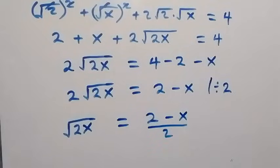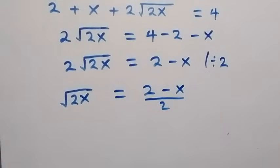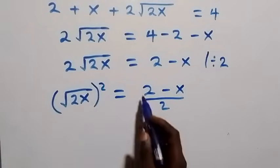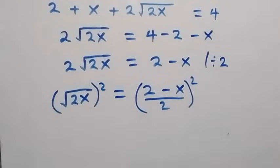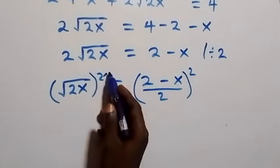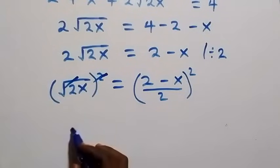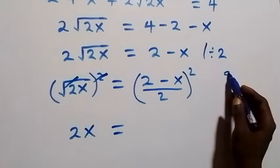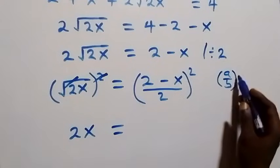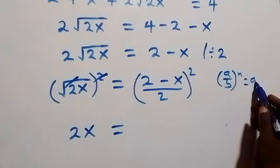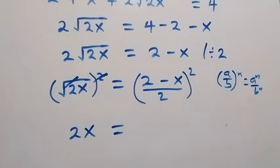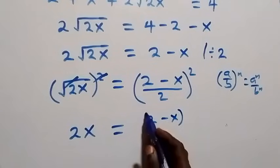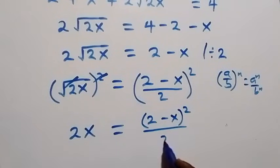We can also square both sides here. When we square this side we have everything squared, and from here the square cancels the square root, giving us 2x. On the right side, it follows from the rule: a over b raised to power n equals a to the n over b to the n. So we square 2 minus x over 2, giving us 2 minus x squared, over 2 squared.